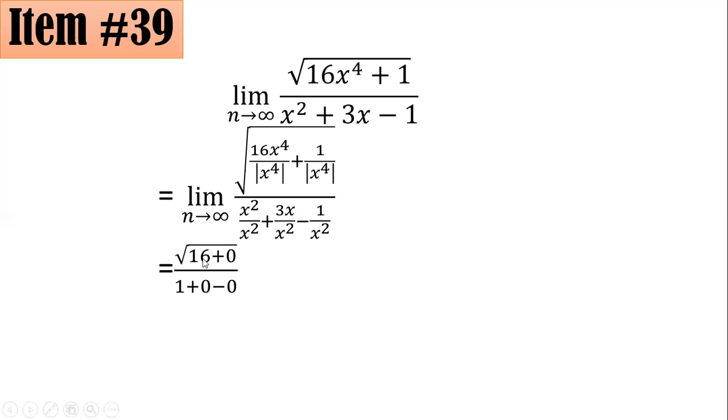The numerator becomes √(16 + 0) all over 1 + 0 - 0, which is √16 = 4 over 1, which is simply 4. Hence, the correct answer is letter A.